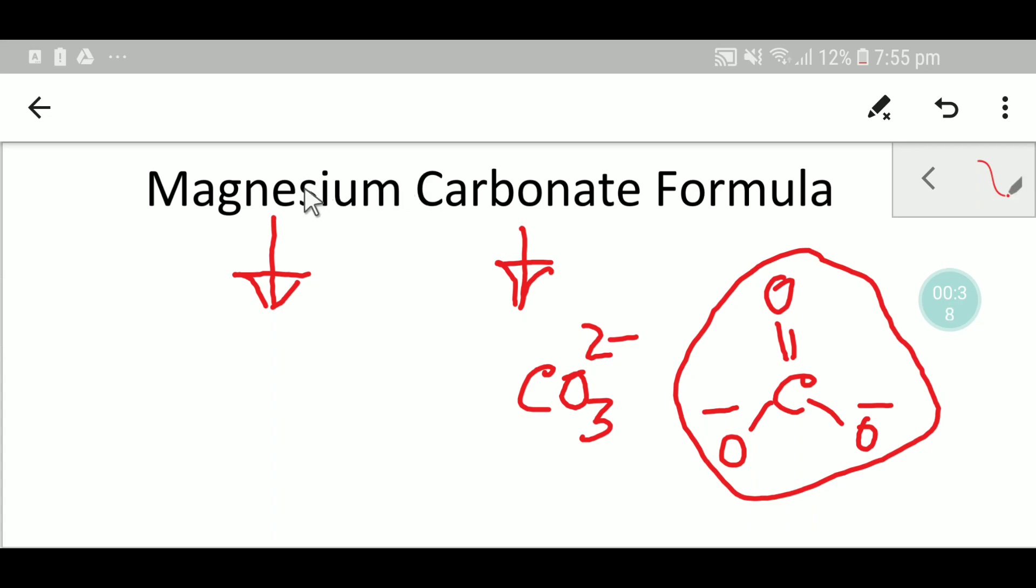The symbol of magnesium is Mg and you know that magnesium is in group 2 of the periodic table. Magnesium has a tendency to release two electrons.